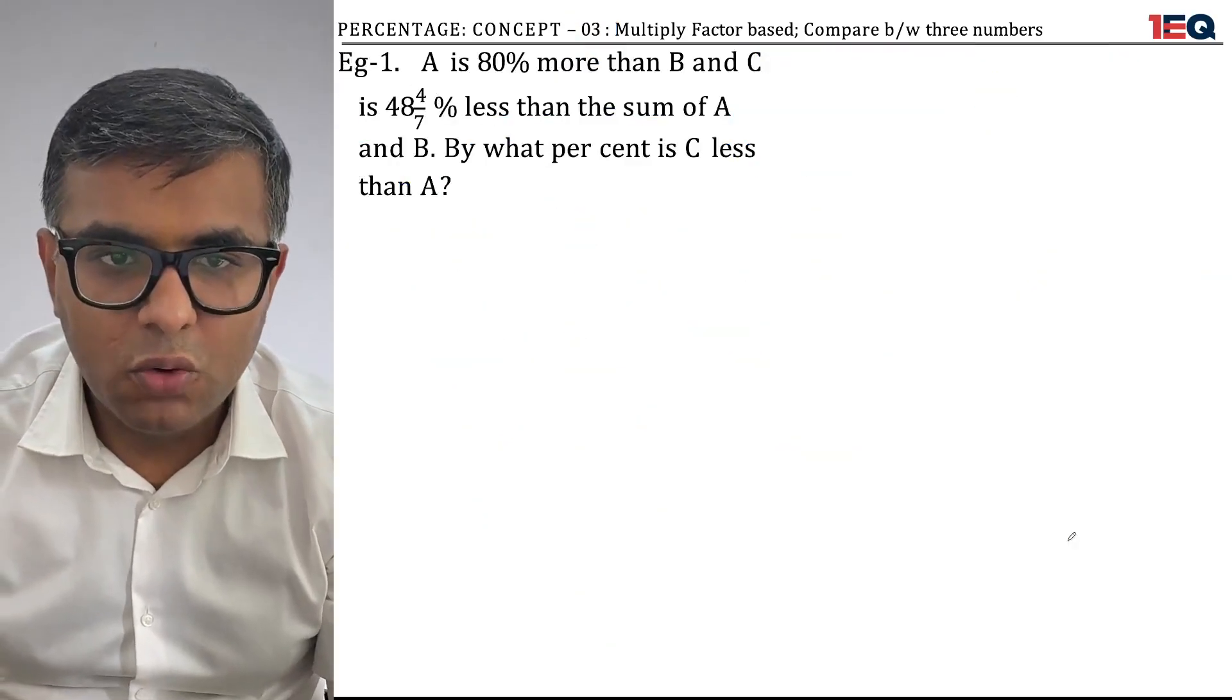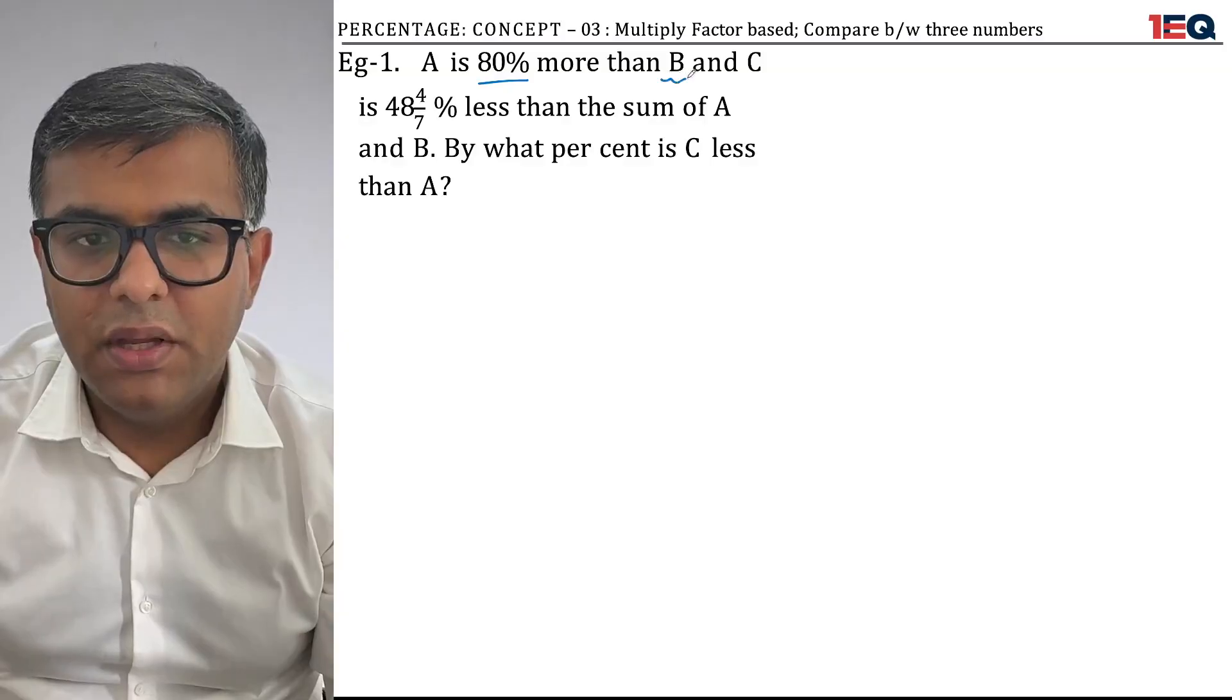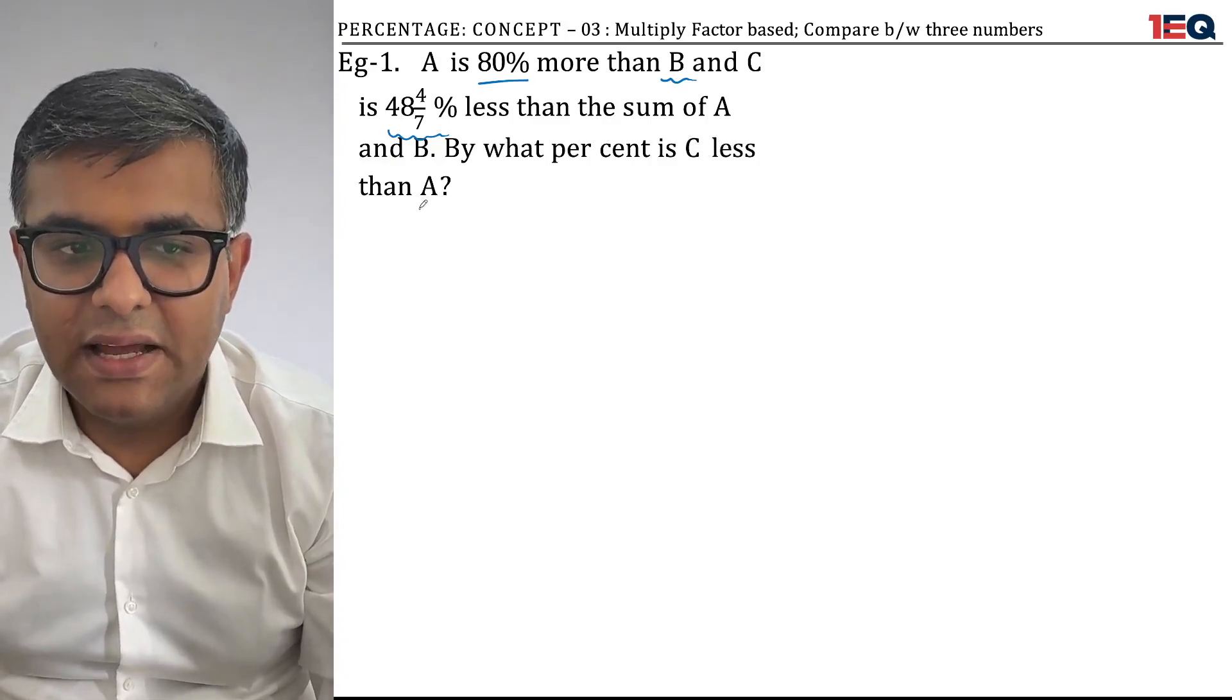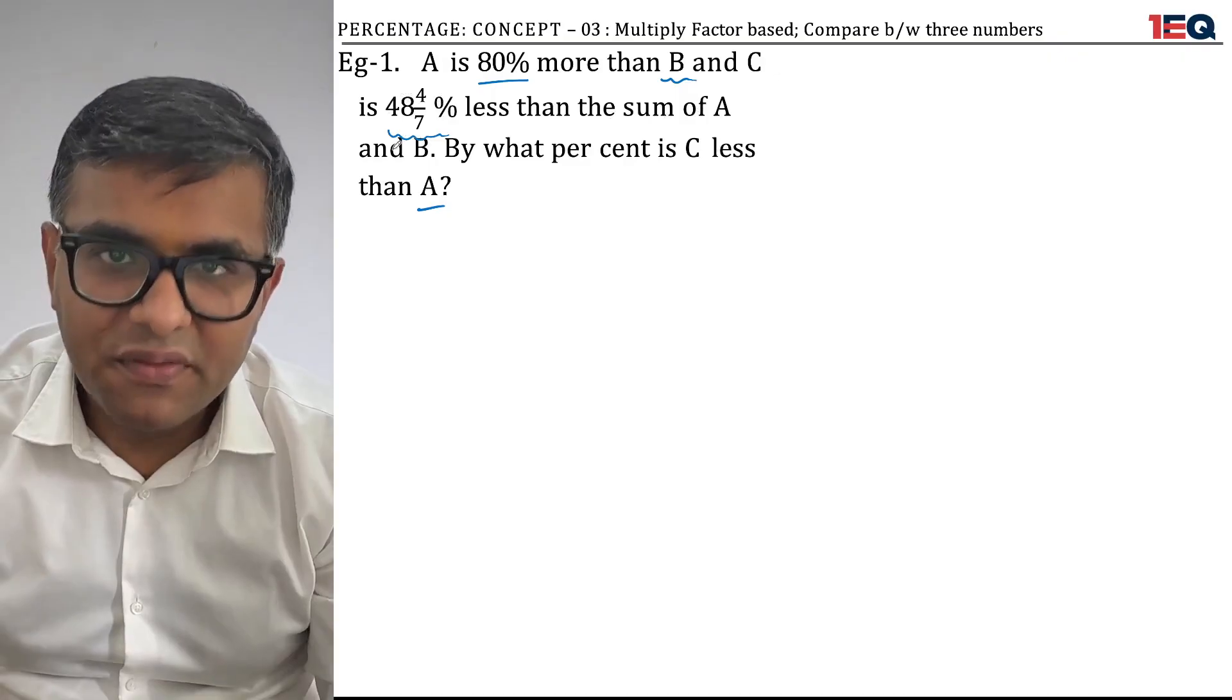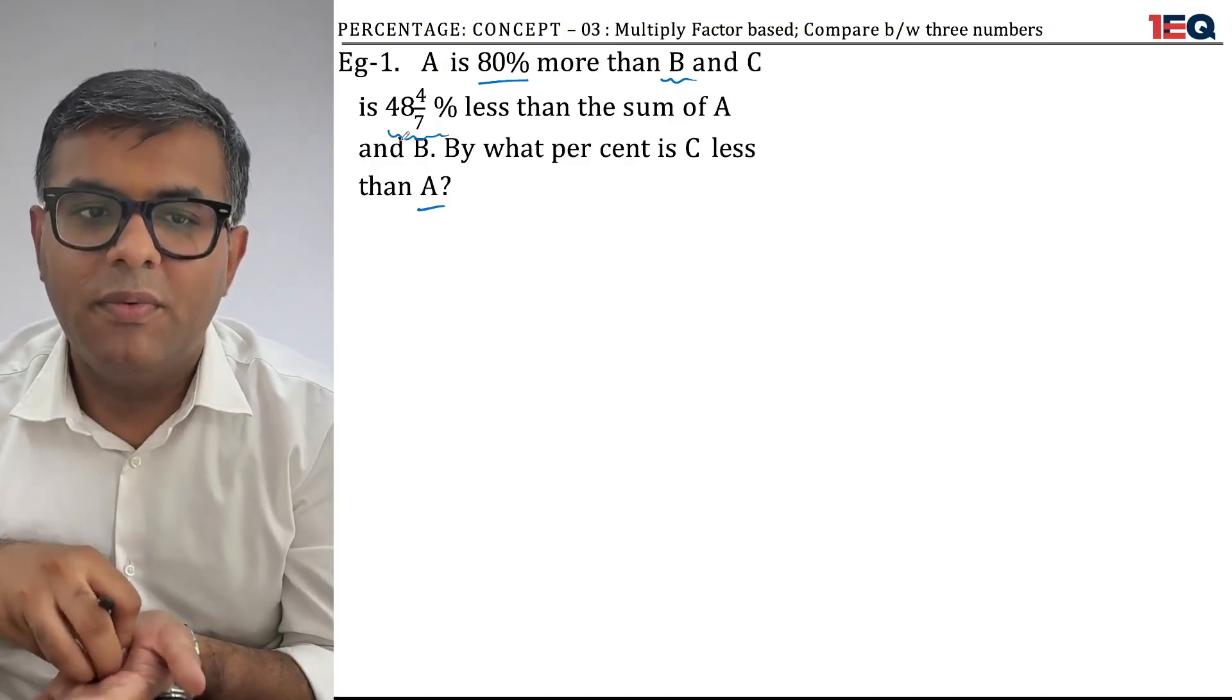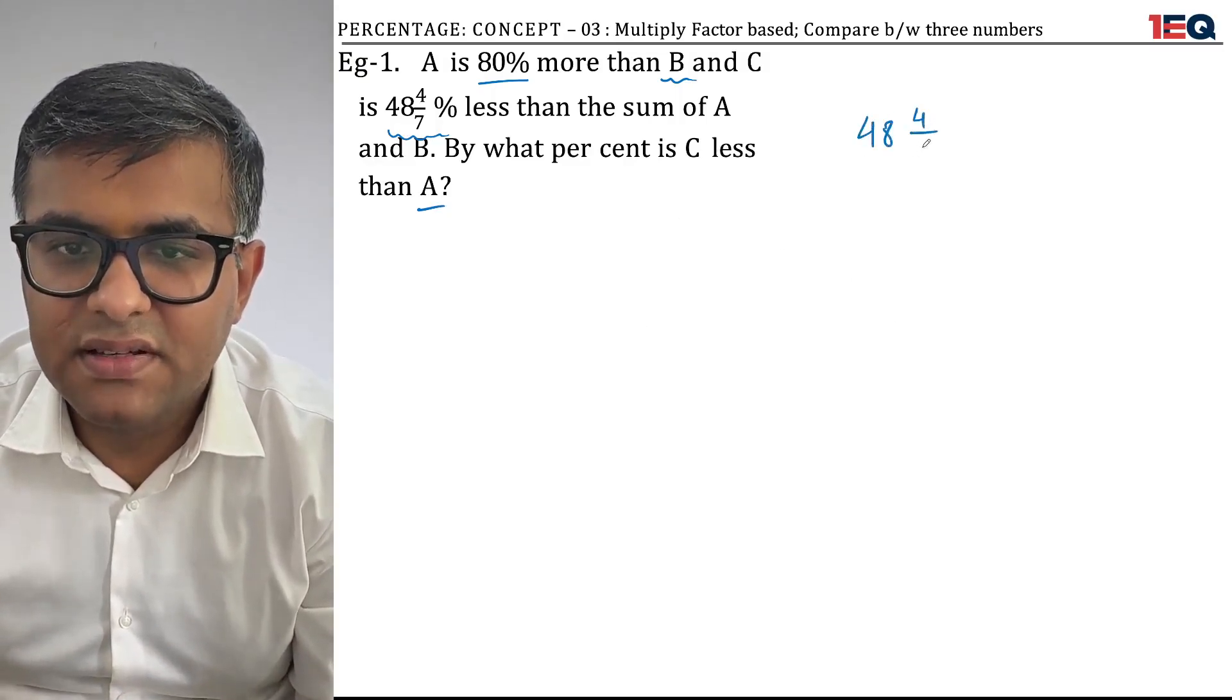Now we're moving on to two questions for concept 3. I hope you're ready with your pen and papers. It says A is 80% more than B, and C is 48 4/7% less than the sum of A and B. By what percent is C less than A? This is related to ratios. The bone of contention, the source of the problem, is 48 4/7%.